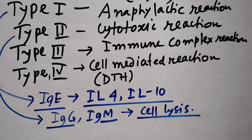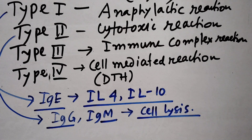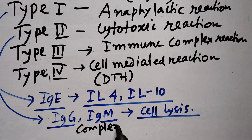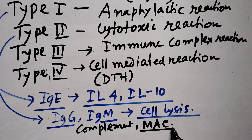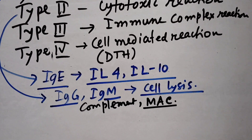Type 2 cytotoxic hypersensitivity activity results in conditions such as hypothyroidism, Hashimoto's disease, and myasthenia gravis. These are all examples of Type 2 hypersensitivity.